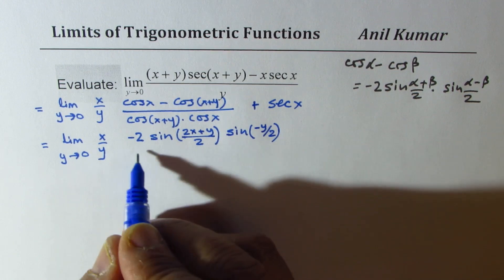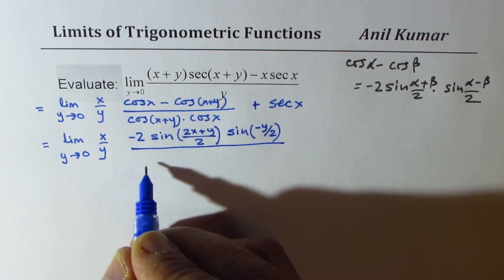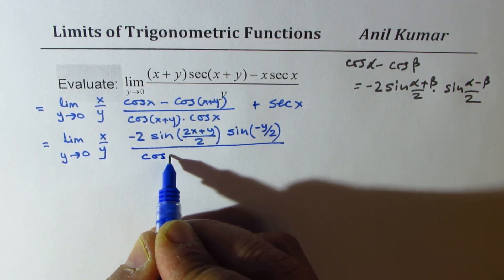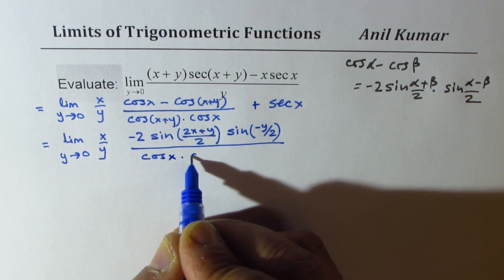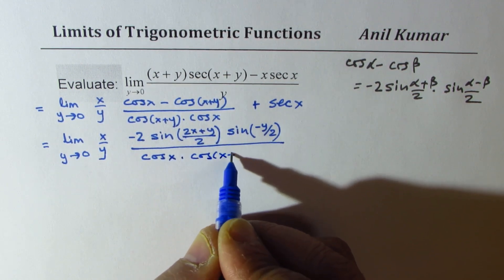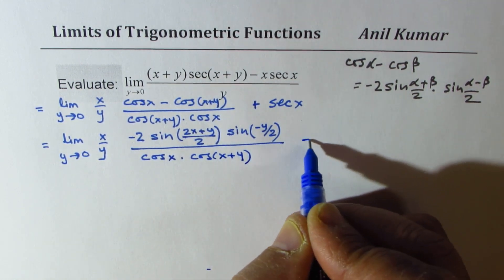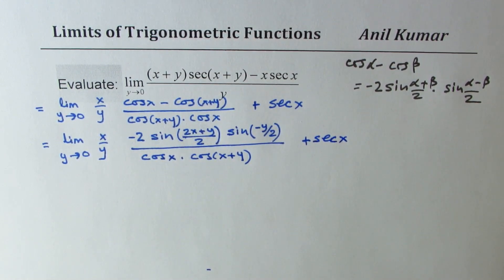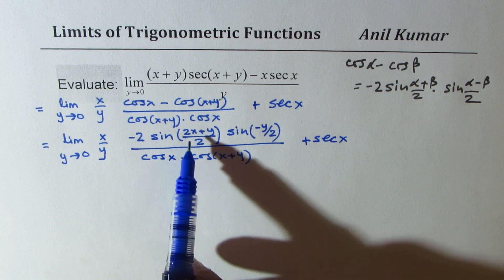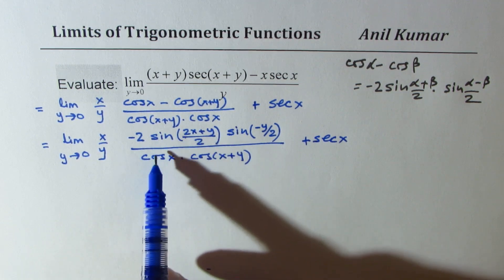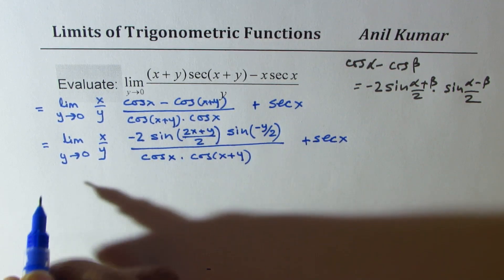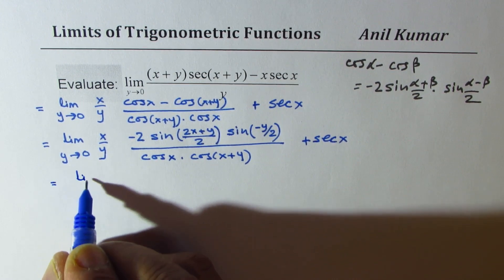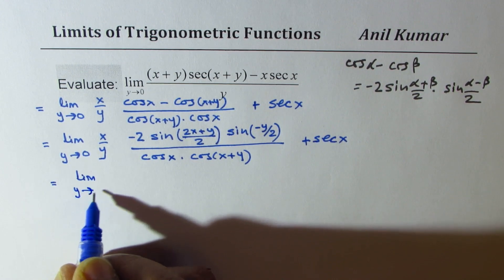So x cancel over cos x times cos x plus y plus secant x. Now these terms are independent of y, we could rearrange this, write this as limit y approaches 0.